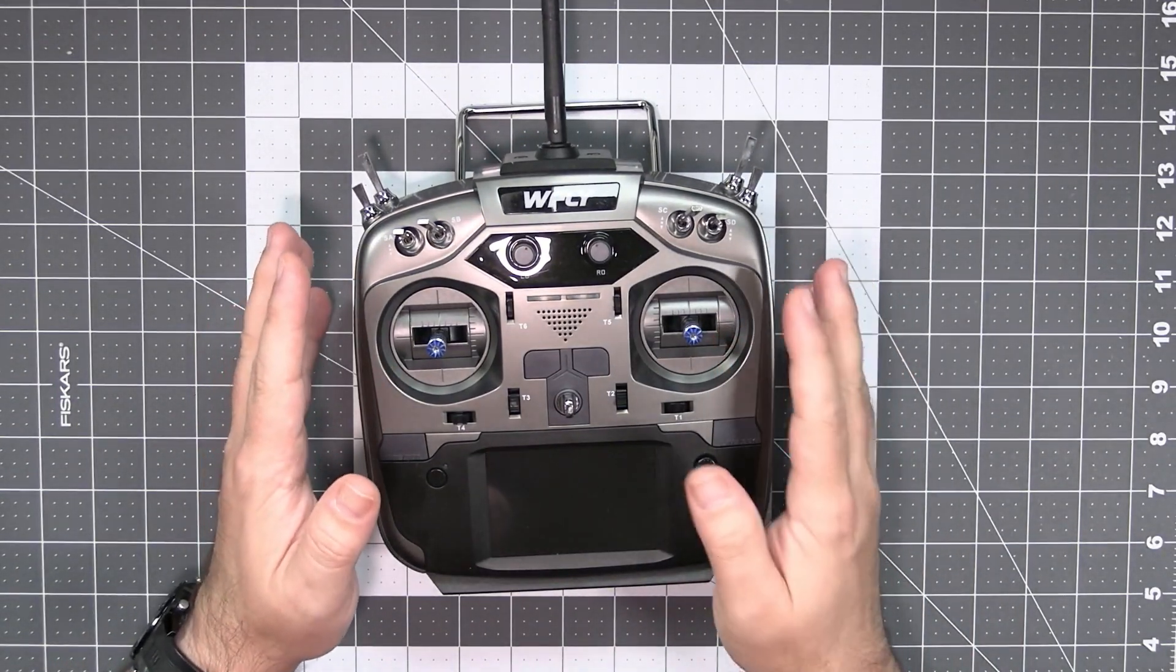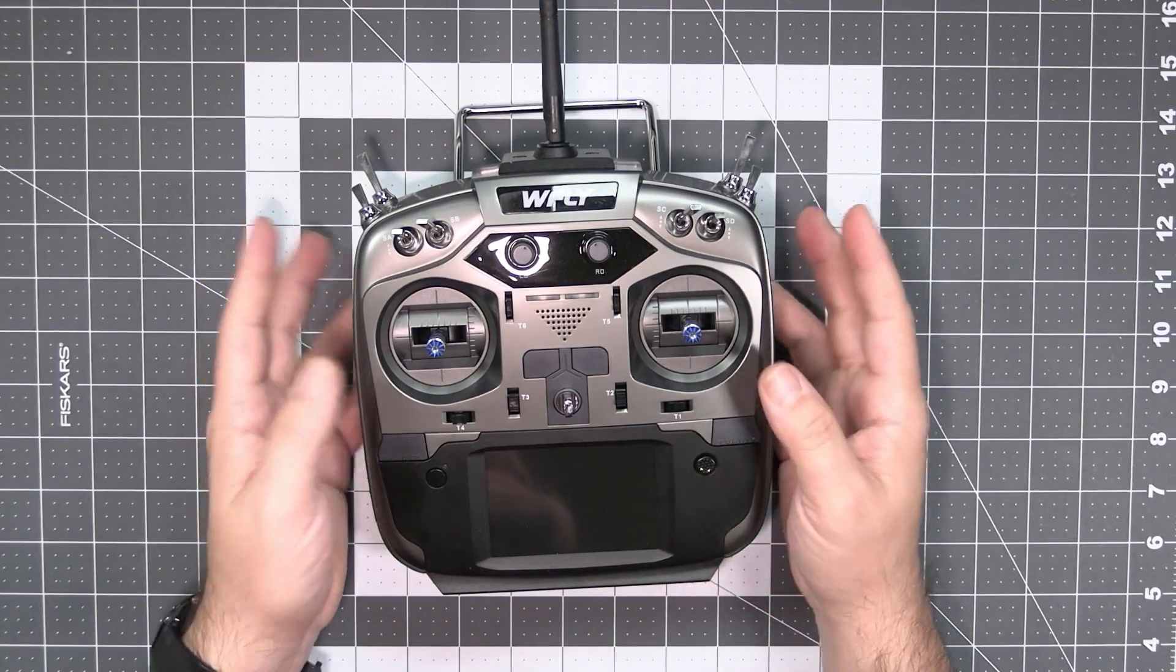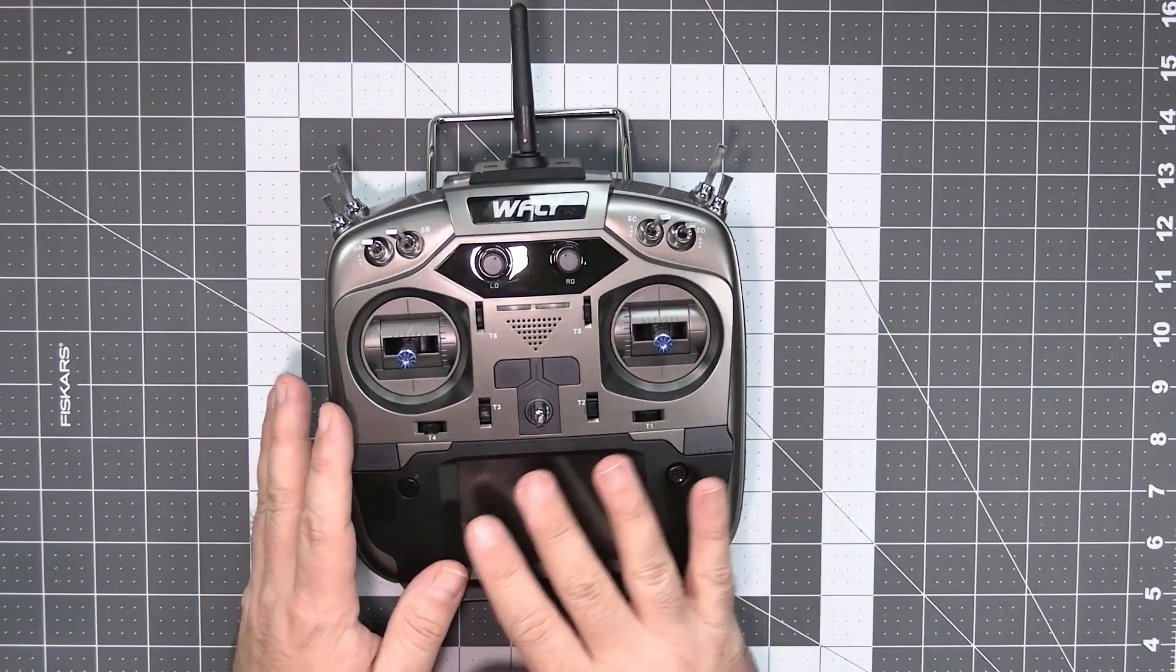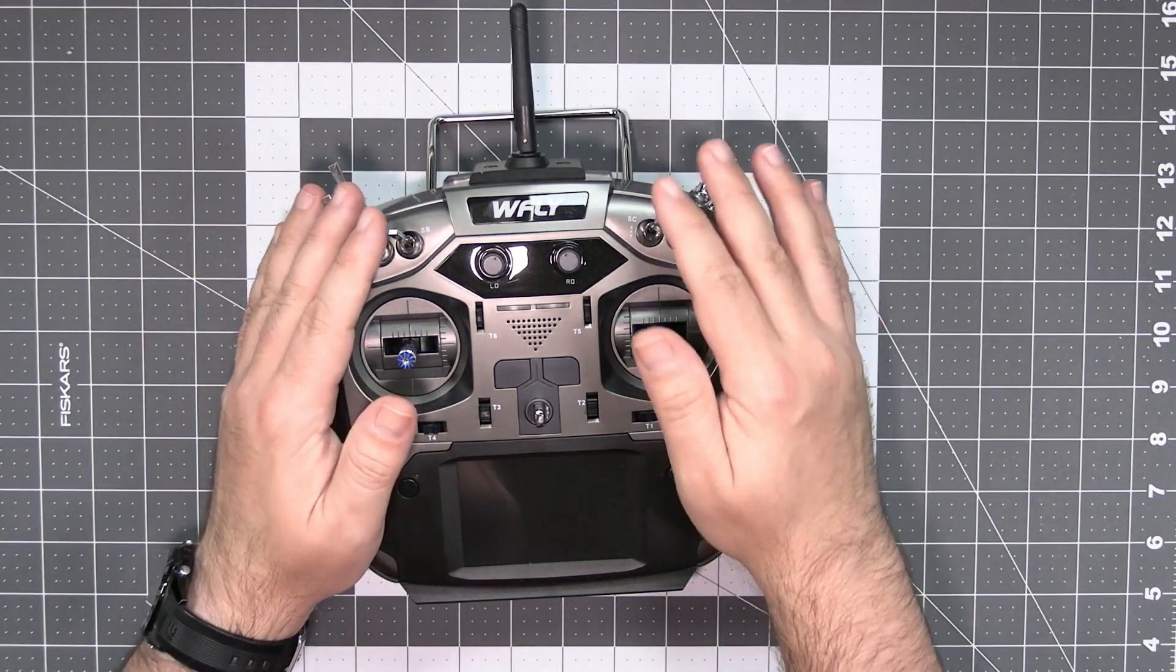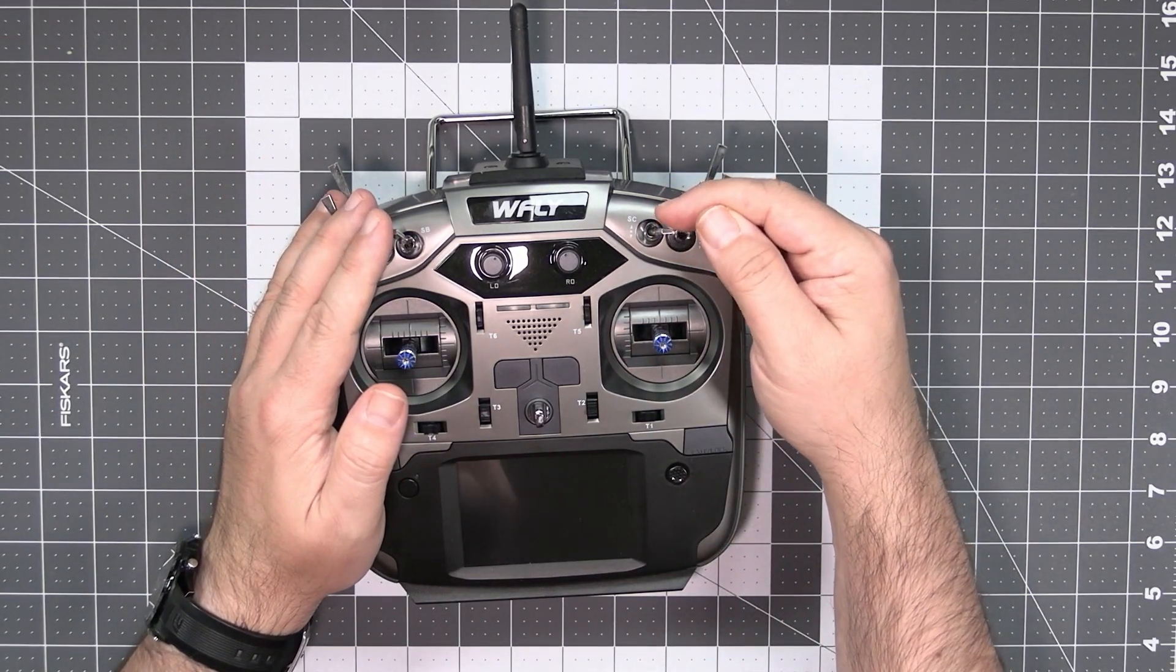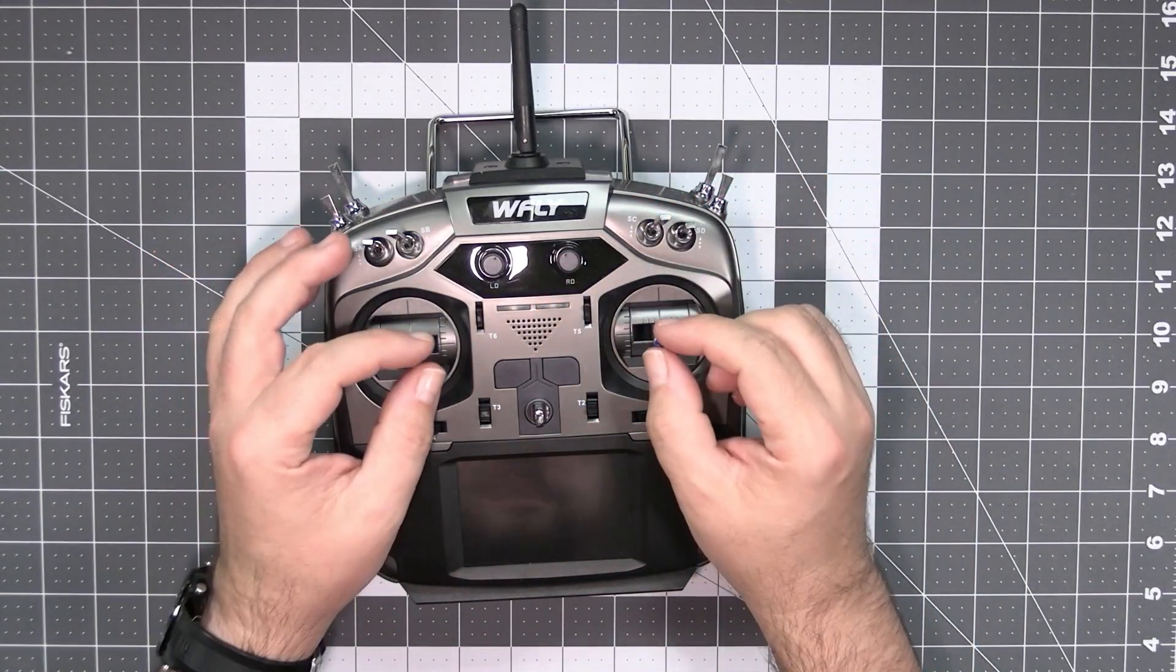This is the WFLY AT16S and from the outside it looks like any other OpenTX radio. We have two gimbals, we have the screen, we have switches. By the way, those are nice switches. I really do like those switches, the detent is nice and there is not too much resistance on the movement, so they feel super great.